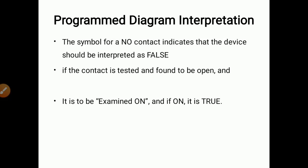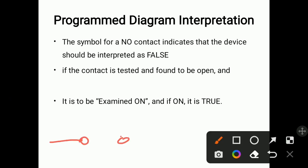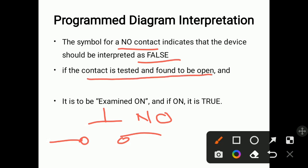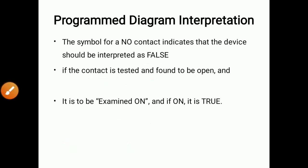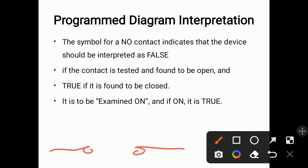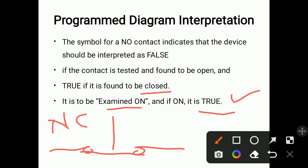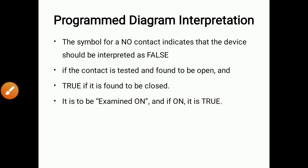The symbol for a normally open contact indicates that the device should be interpreted as false. If the contact is tested and found to be open, there is a false condition. When the switch gets closed — that is, it becomes a normally closed contact — it is examined as on and its condition is true. So when the switch is closed, its condition is true, and when open, its condition is false.